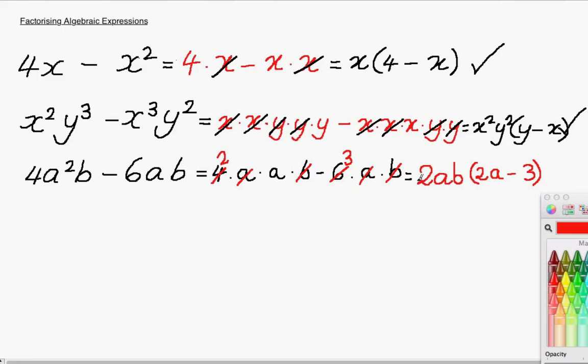Once again, check your working out by multiplying out again. 2 times 2 is 4. The a and the a make a squared b. 2, 4, a squared b. Perfect. Looking at the second part, 2ab times minus 3 is minus 6ab. So once again here, you know you're correct.